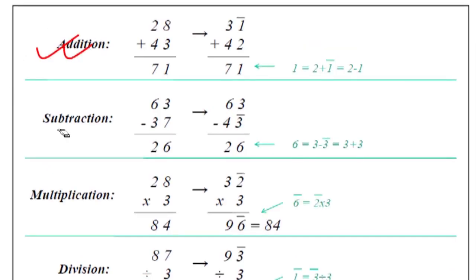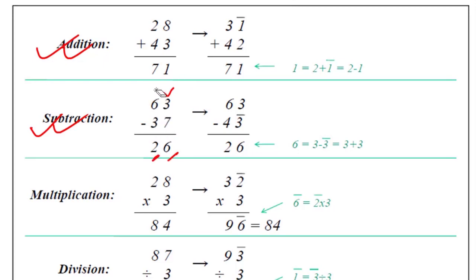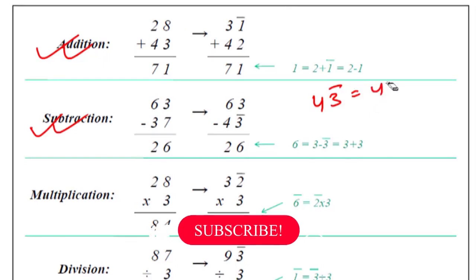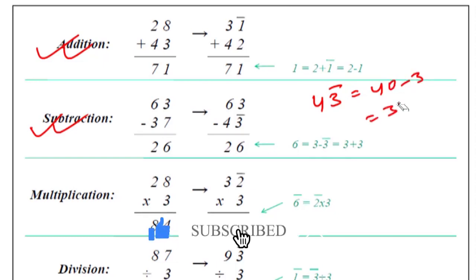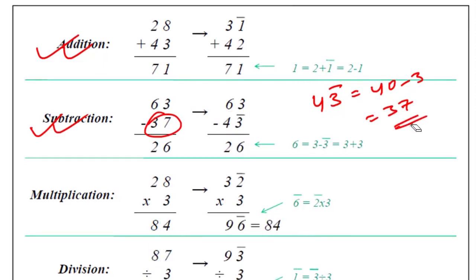So we have done the addition. Now moving to subtraction. Let's suppose we have to subtract 63 minus 37. Traditionally, you take a borrow. But now using bar numbers — we can write 37 as 43 bar, because 43 bar equals 40 minus 3, which is 37. So we write 43 bar instead of 37.